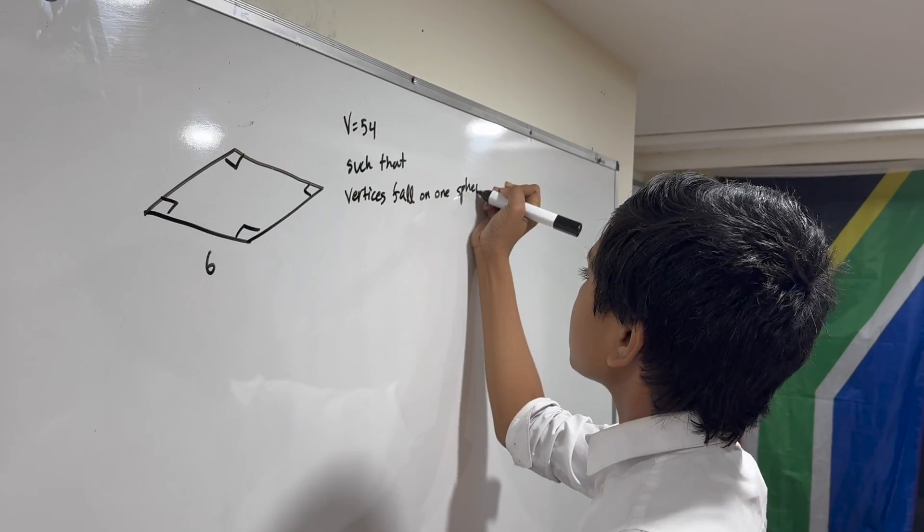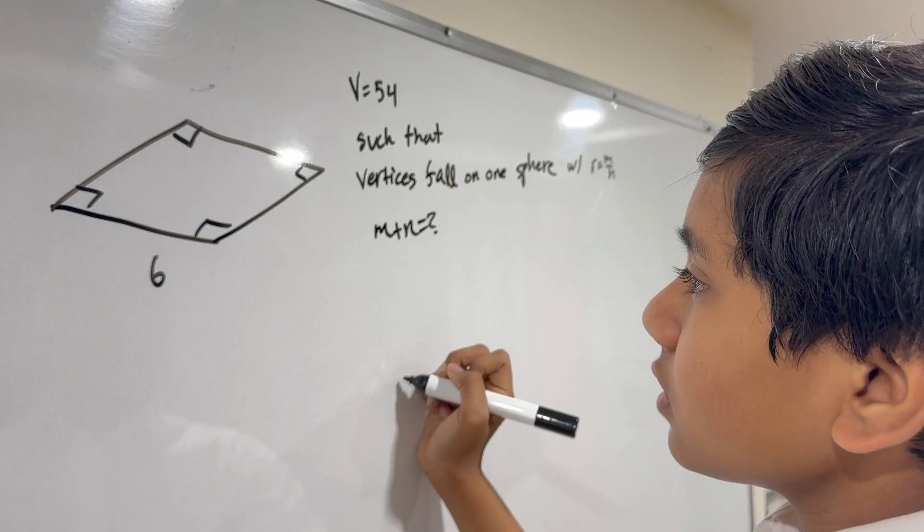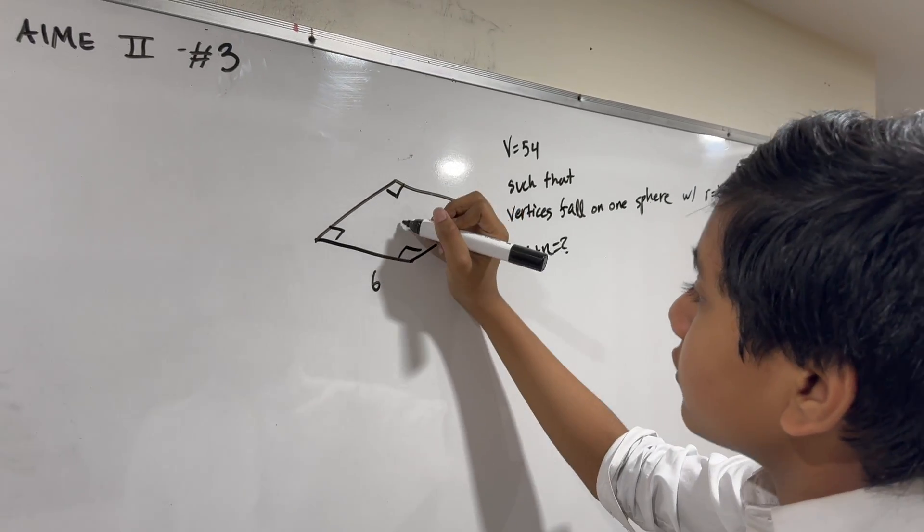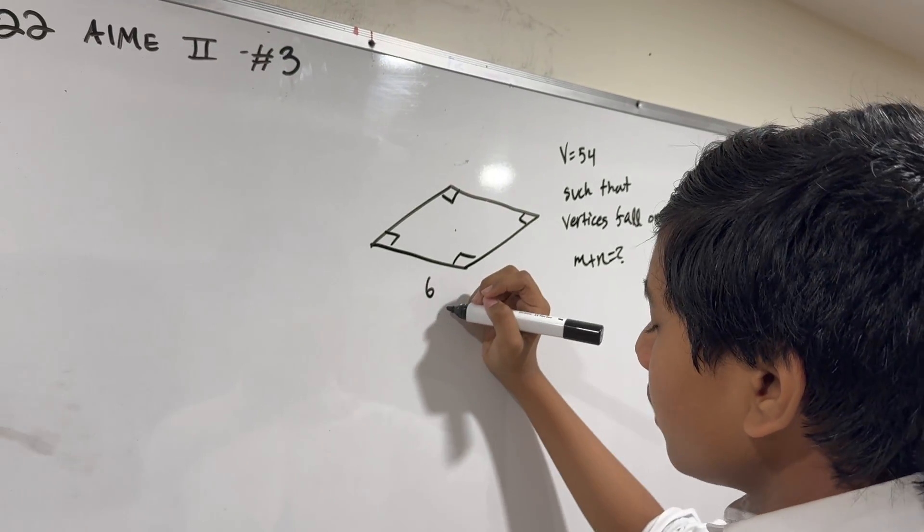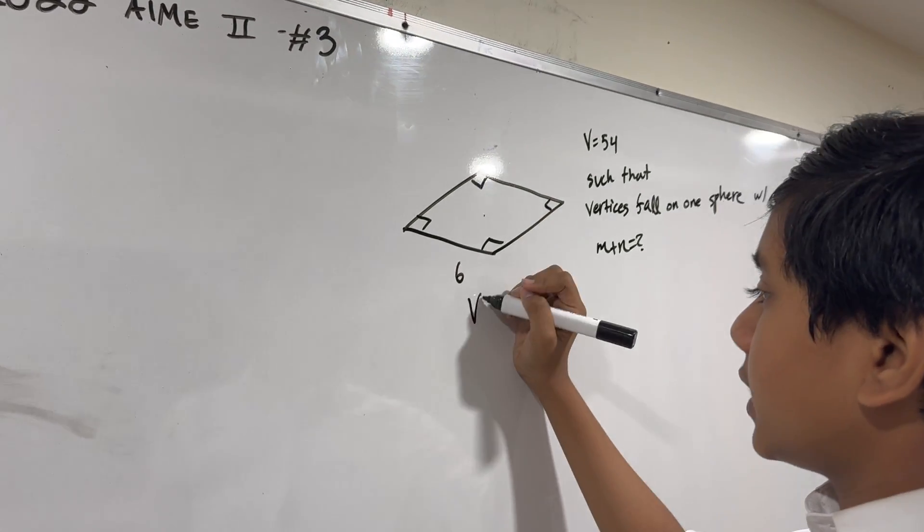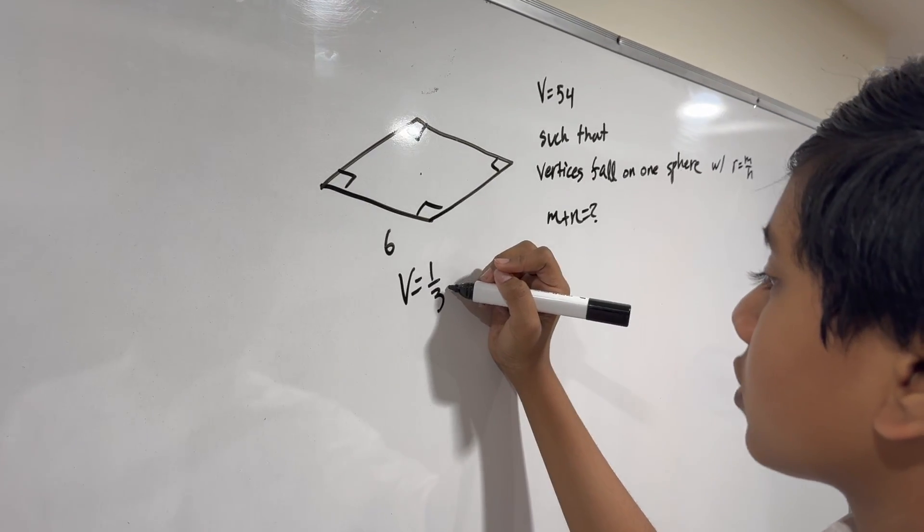This sphere has radius m/n. So first of all we want to find the dimensions of the pyramid. Because it's a regular square pyramid we can use the formula volume equals one-third area of the base times height.